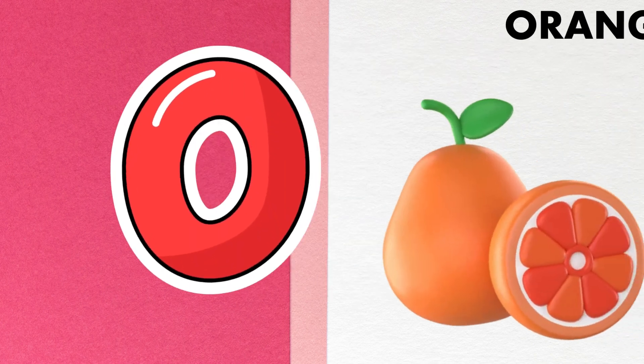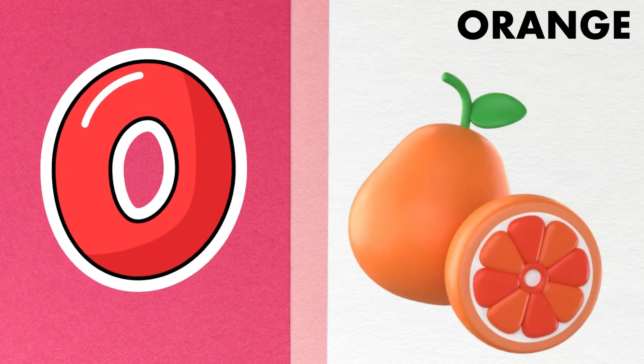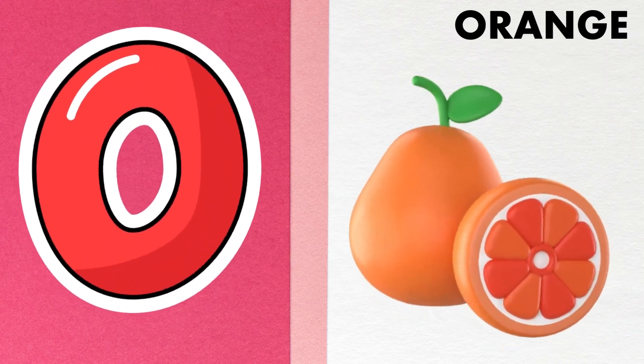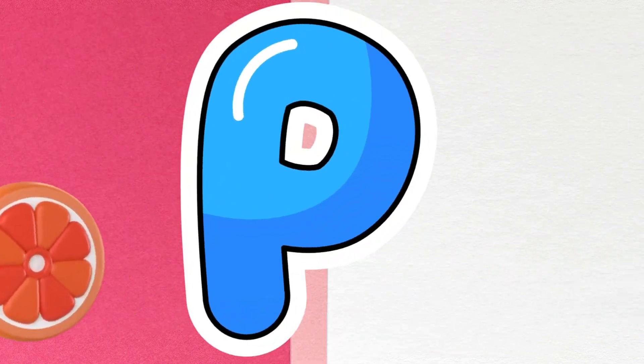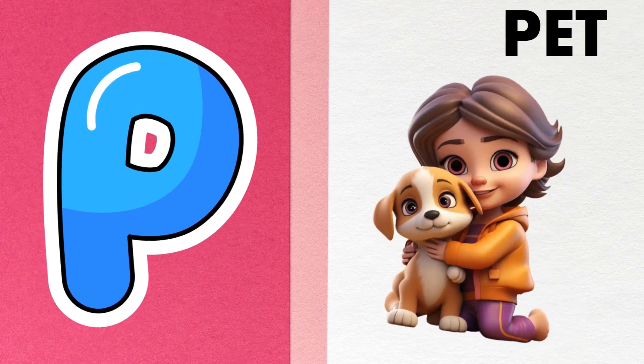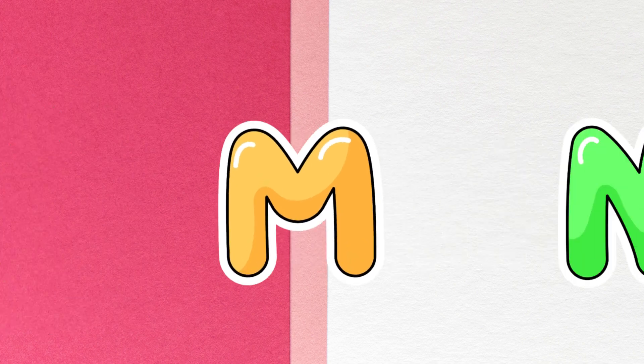O is for orange, o-o-orange. P is for pet, p-p-pet.